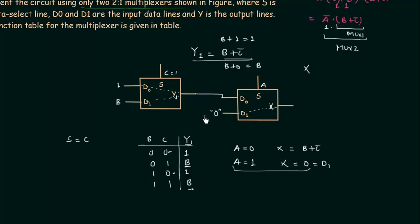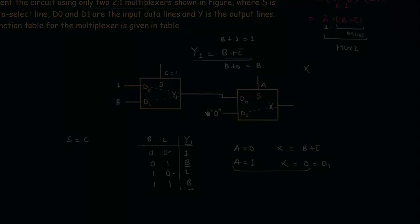This should be clear since we have already solved examples on implementing logic functions using multiplexers, and working with 2-to-1 MUX is relatively straightforward. I will end this lecture here. If you have any doubts, you may ask in the comment section.